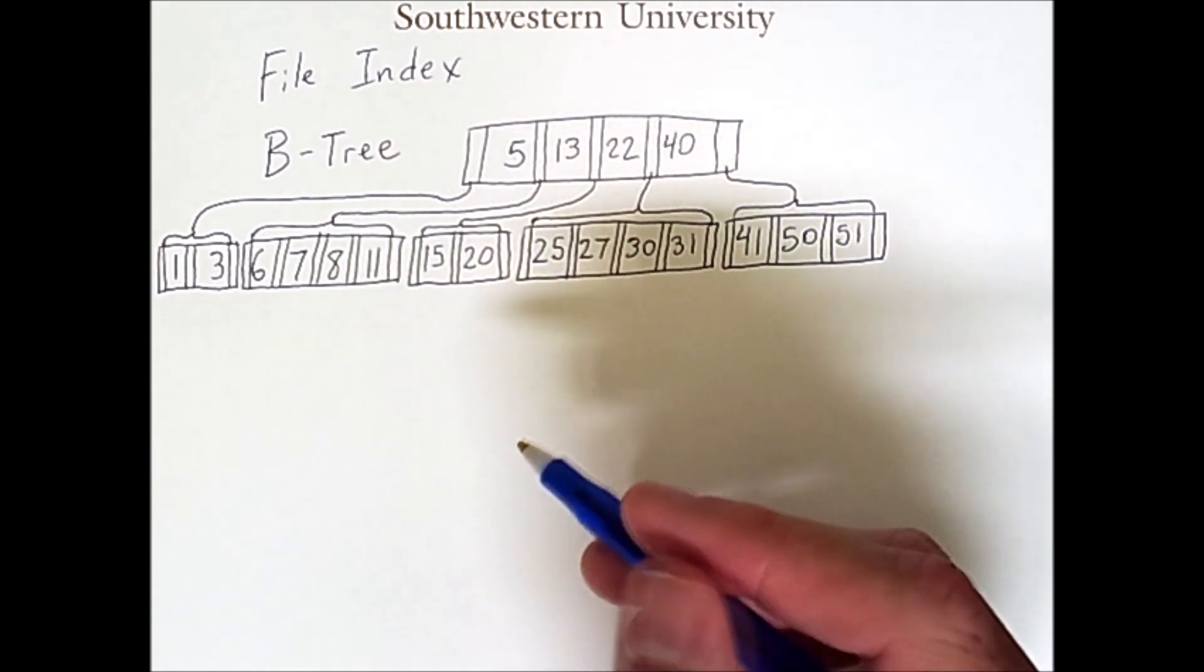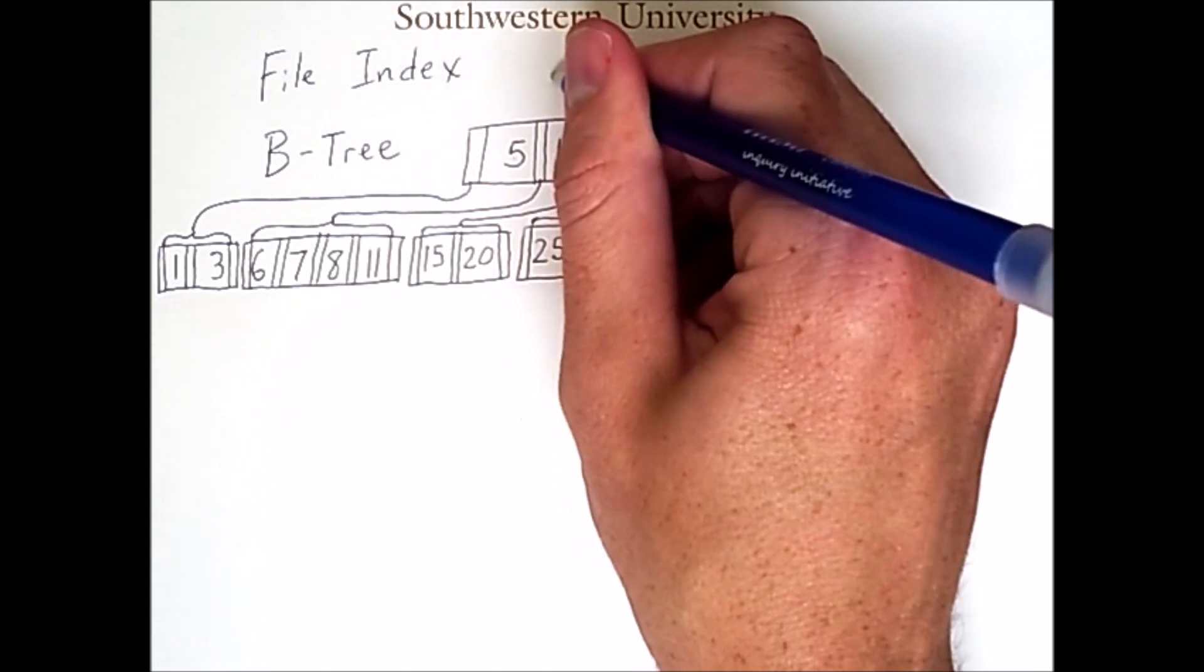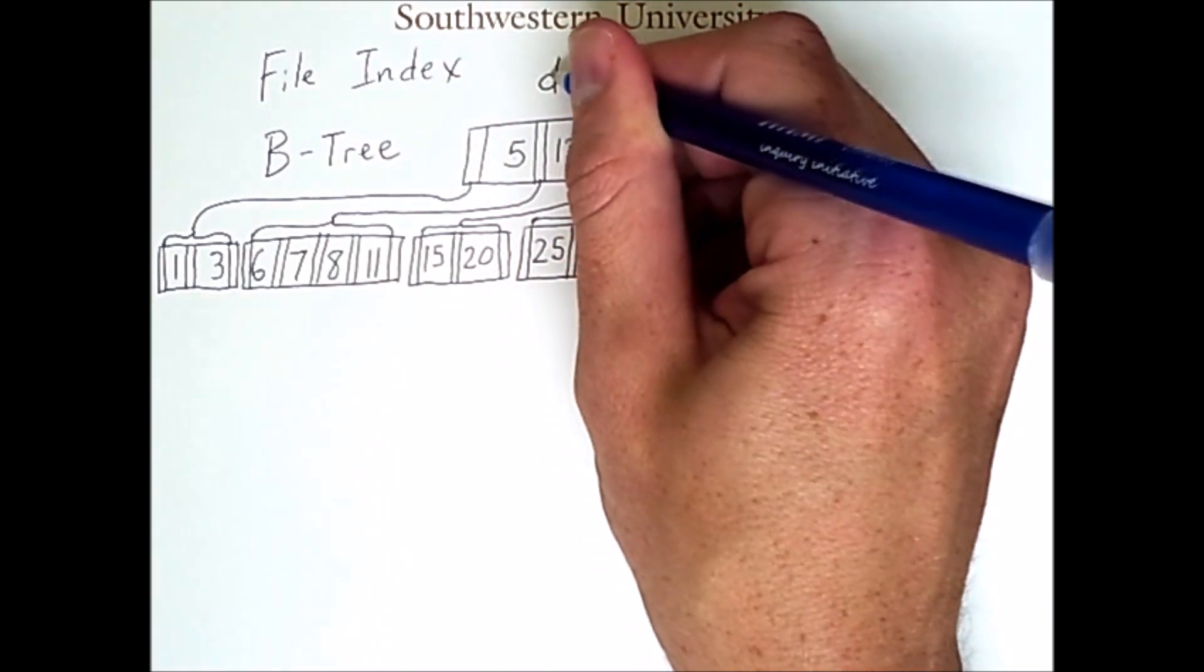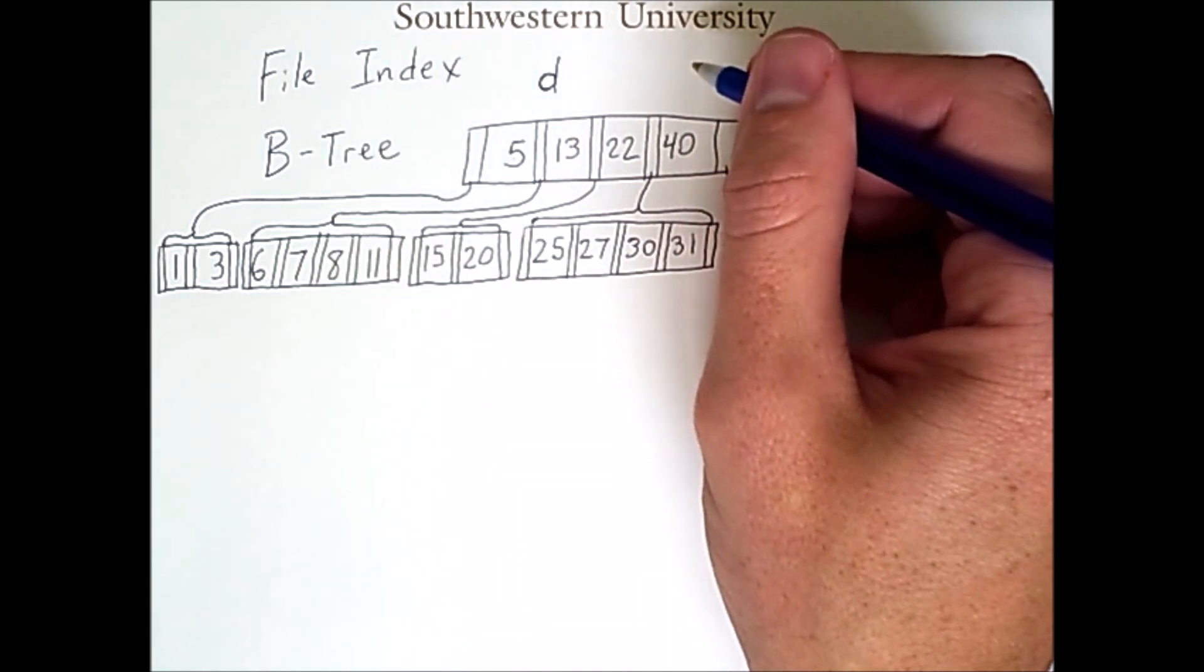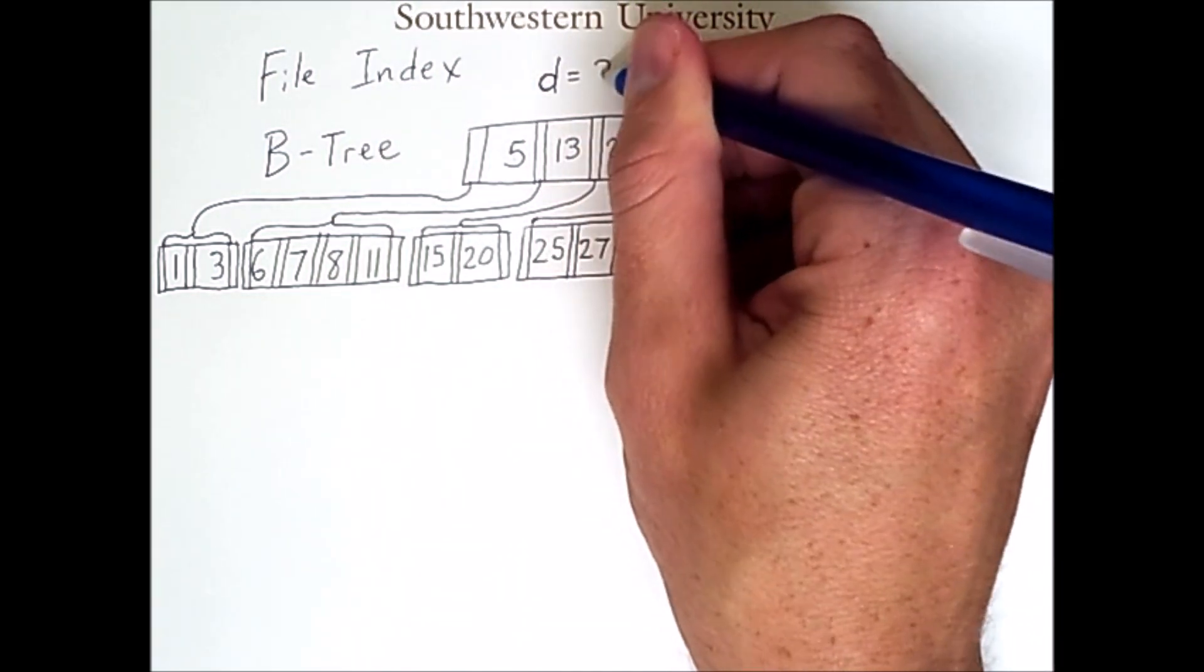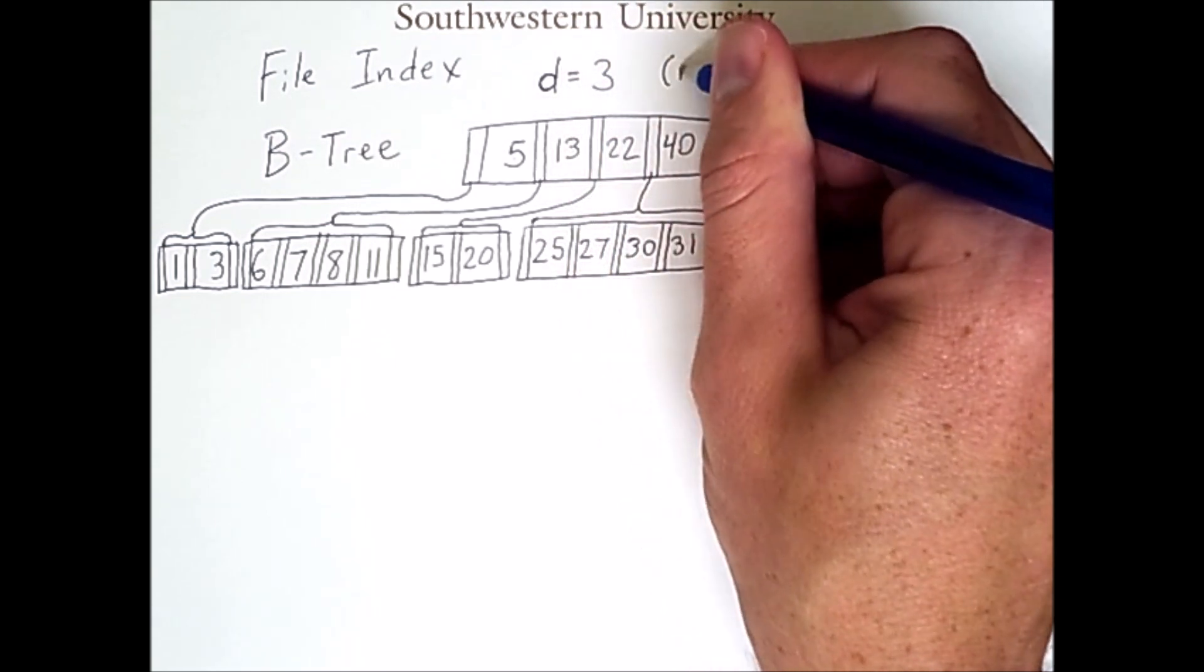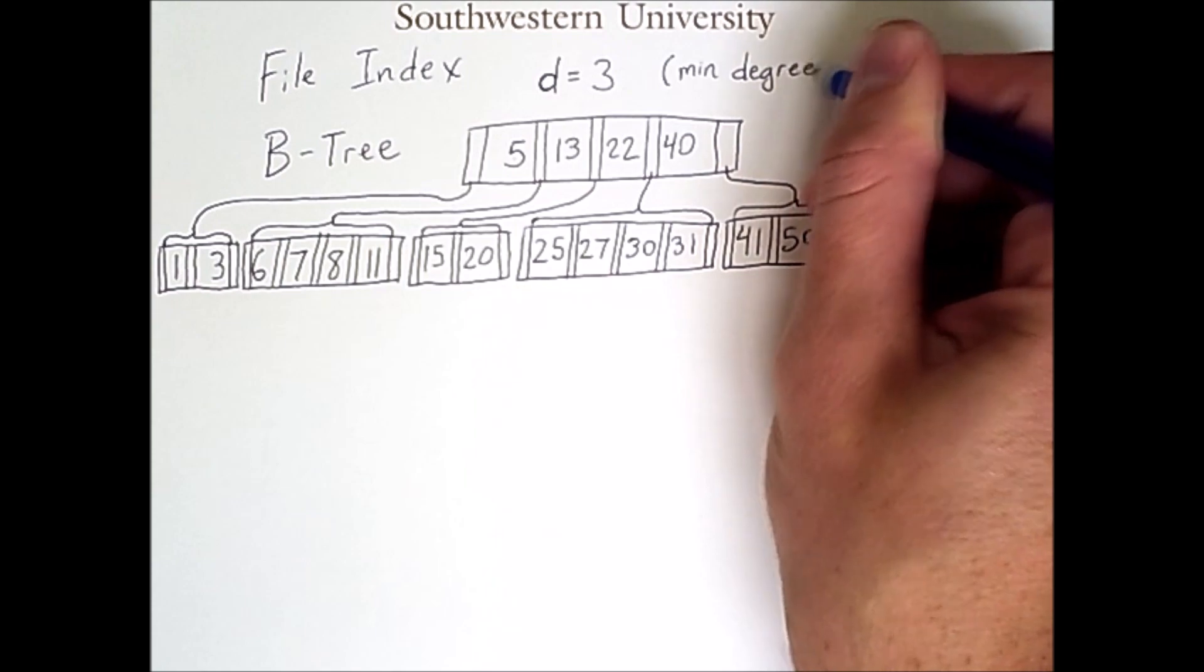But one more thing that needs to be discussed is d, which is a parameter associated with B-trees, and this is the minimum degree. So in this case, we have a d of three, and this is, once again, the min degree of the tree.